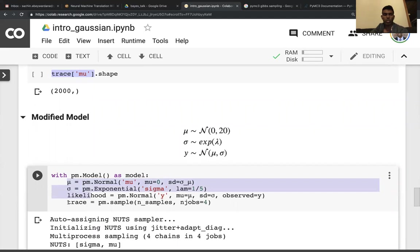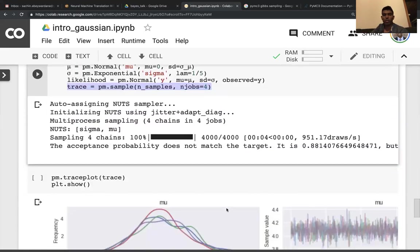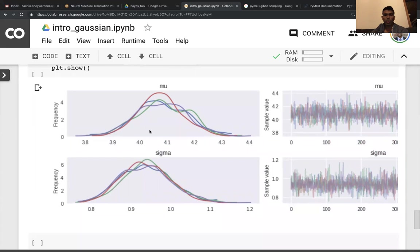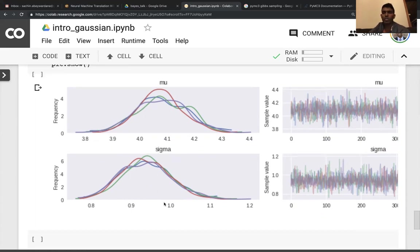To get the posterior, all you have to do is go trace is equal to pm.sample. In this case, again, ask for 500 samples. A little bit slower this time, but that's fine. We see the mean of mu being near four, but great thing is that the standard deviation, the sigma, is also close to one, which is what the true dataset was.